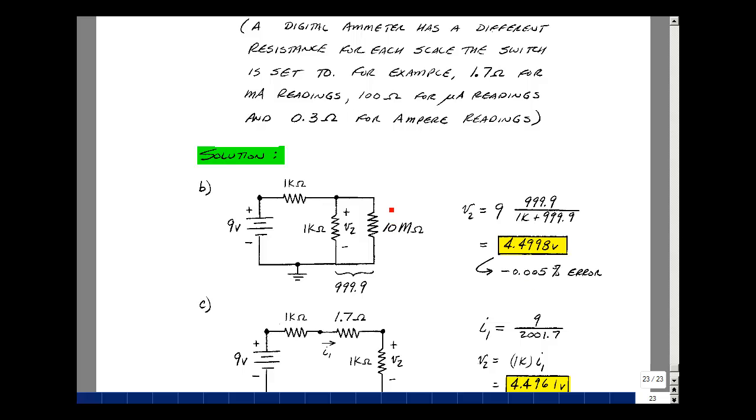So again, whenever you measure something, you do change it. The real key to reducing errors is to make sure that your equivalent circuit has a very minor effect on the thing you're connecting it to.